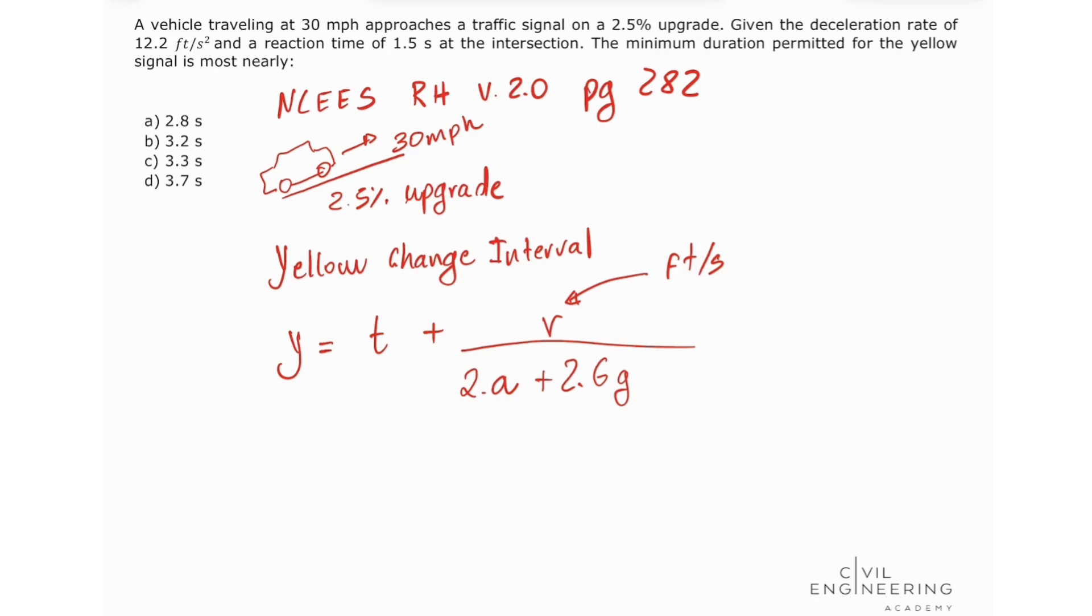Okay, so let's input some values here. We have that our yellow change interval is going to equal 1.5 seconds, plus 30 miles per hour, times...